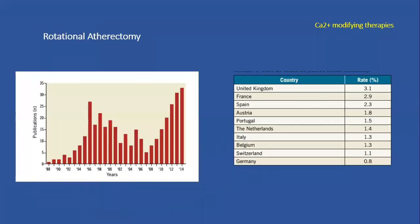Rotational atherectomy is a technique that's been in use since 1988, and there are two peaks in publications. The first peak of use was at the end of the 1990s, and again after 2010, interest in rotational atherectomy increased. I'll get to why this happened.